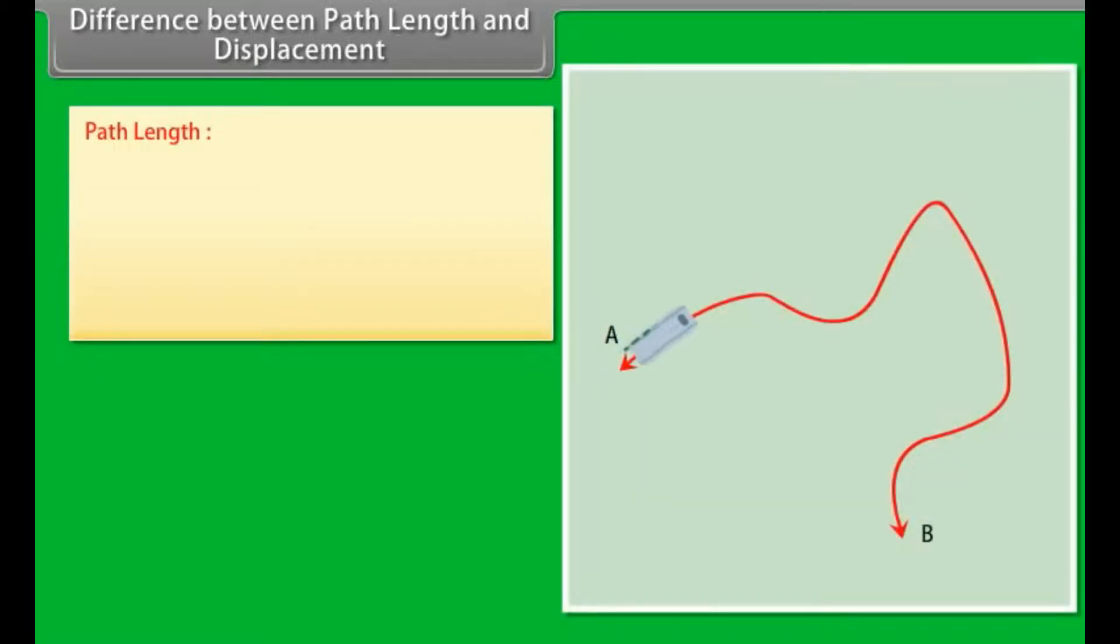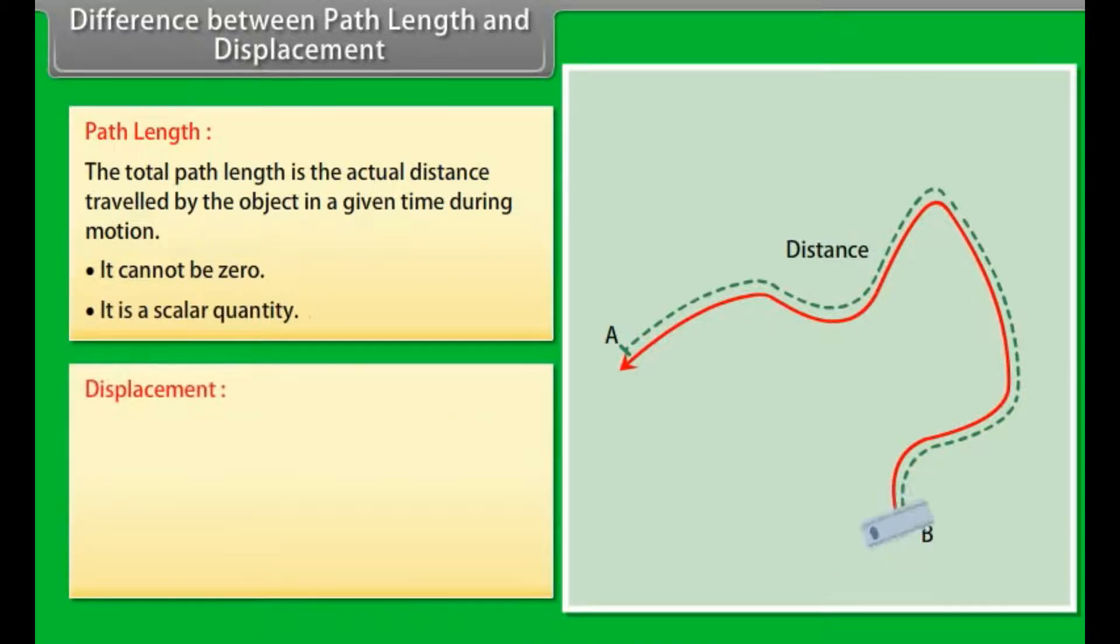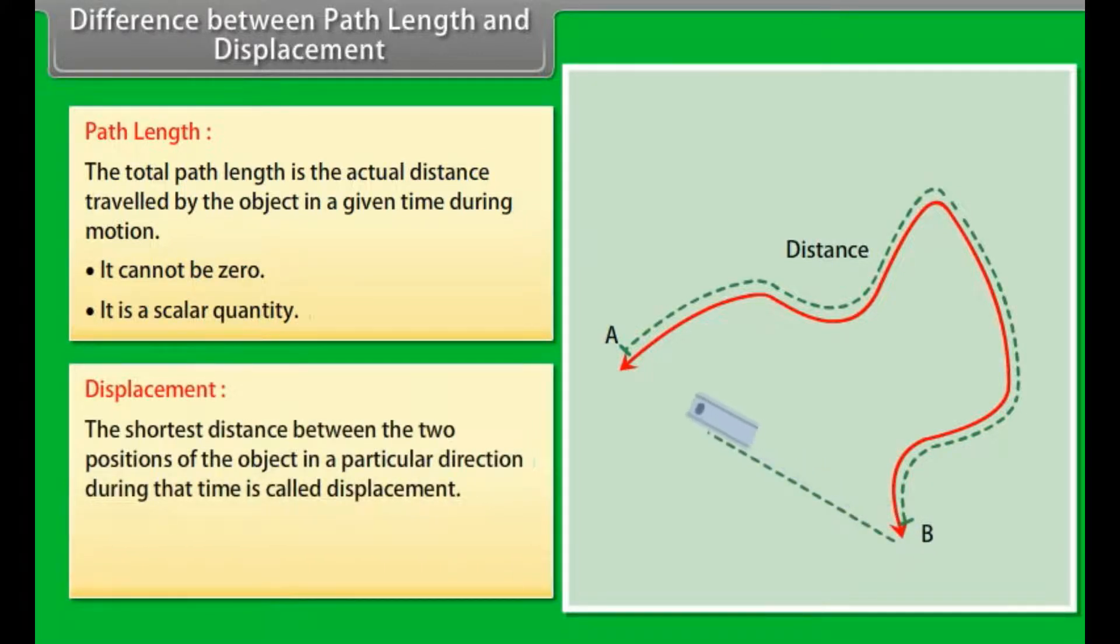Difference between path length and displacement. Path length: The total path length is the actual distance traveled by the object in a given time during motion. It cannot be zero. It is a scalar quantity. Displacement: The shortest distance between the two positions of the object in a particular direction during that time is called displacement. It can be zero. It is a vector quantity.